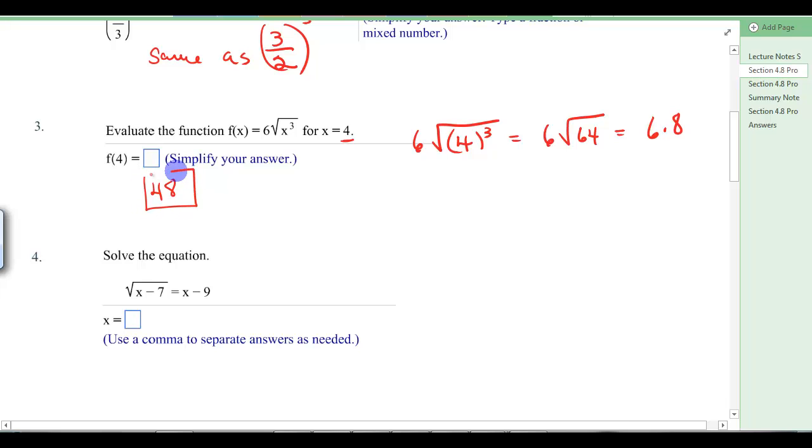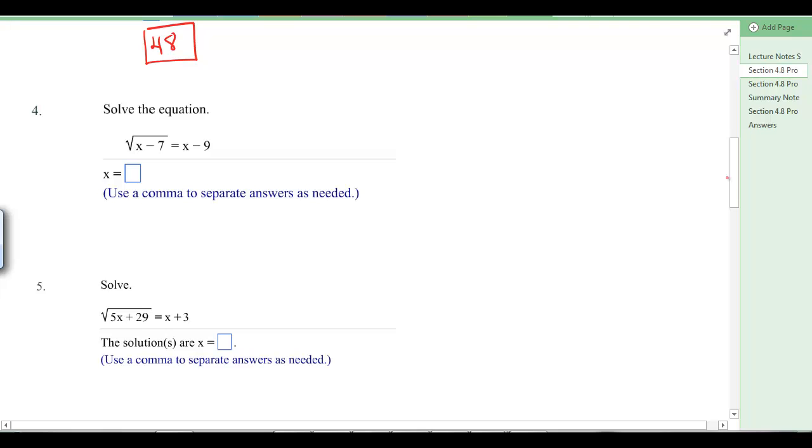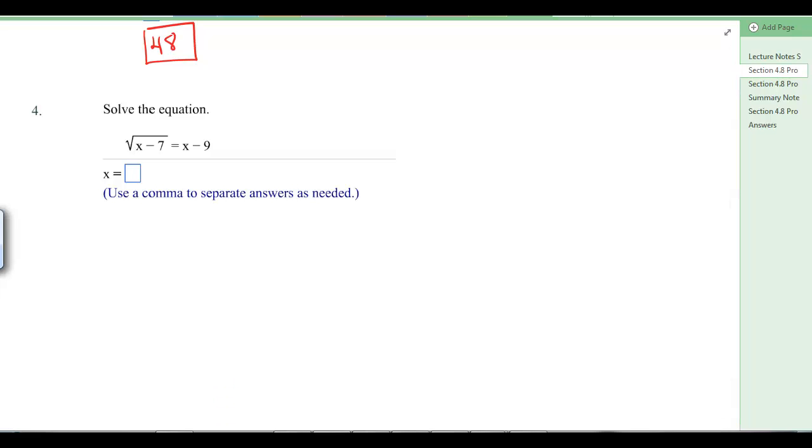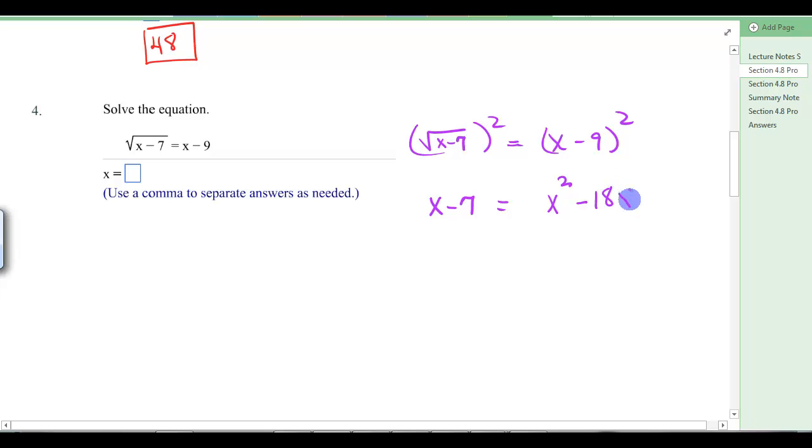We're going to do those same steps that we did in the example. So we're going to square both sides. So we've got square root of x minus 7 squared equals x minus 9 squared. When we square this one, we're left with x minus 7 equals. And we're going to square this. And the shortcut for squaring a 2 term, a binomial, square this guy. The middle term is this times this times 2. So that's negative 9x times 2. That would be negative 18x. And square this one.